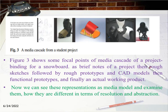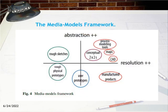The media models framework has two dimensions: abstraction and resolution. Figure 4 refers to the media model's framework in two dimensions: the X-dimension indicates resolution and the Y-dimension indicates abstraction. The positive x-axis indicates high resolution and the negative x-axis indicates low resolution. From the figure, process modeling tools, maps, conceptual photos, and CAD models represent high resolution and high abstraction. Rough sketches represent high abstraction but low resolution.